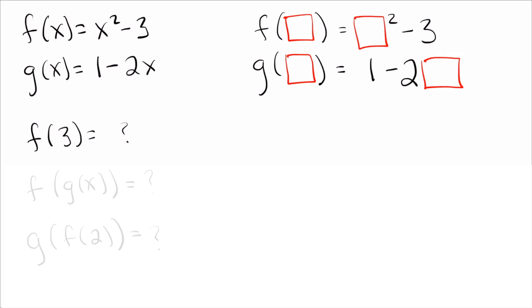So for example, let's look at this first problem, f of 3. For f of 3, we're taking the f equation and we're putting 3 in the box. So let's do that. So I come up to the box and I fill in a 3. So f of 3 is 3 squared minus 3, which is 9 minus 3, which is 6. And there we go. We computed f of 3.